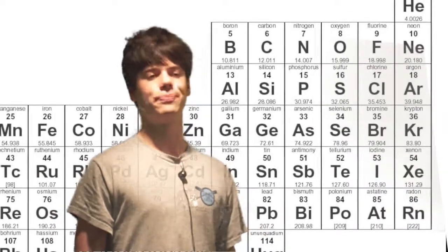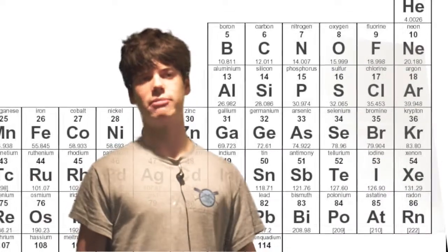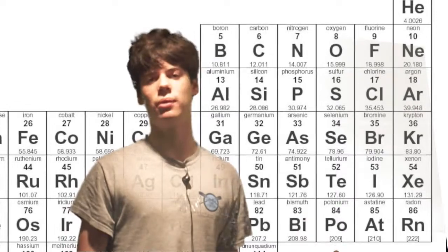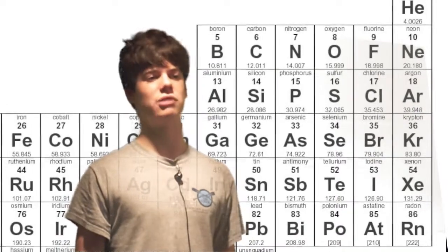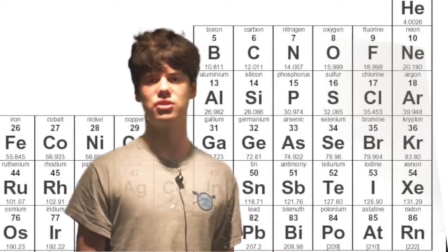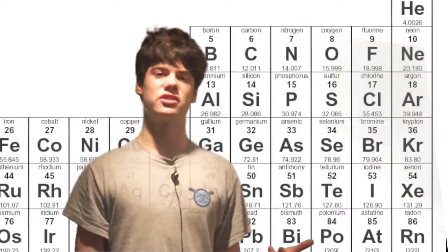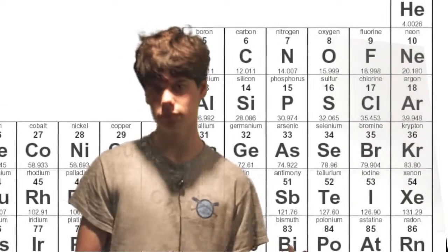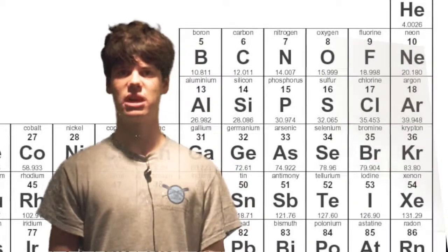Remember when I said the mole was exactly calculated for a specific purpose? Here's why. If you look on the periodic table, you find the atomic mass — a weighted average of all isotopes of an element. For example: carbon is 12.01, hydrogen is 1.01, oxygen is 16.00. These are measured in atomic mass units.